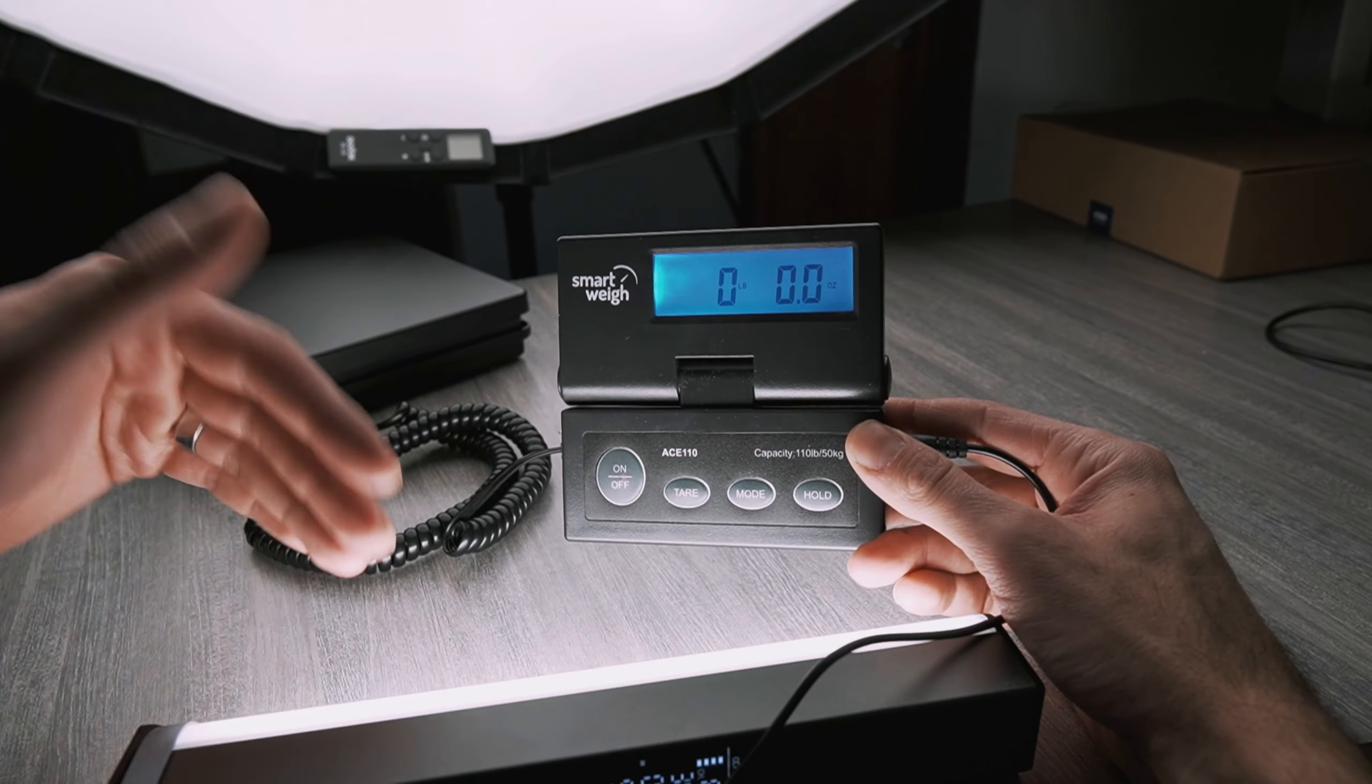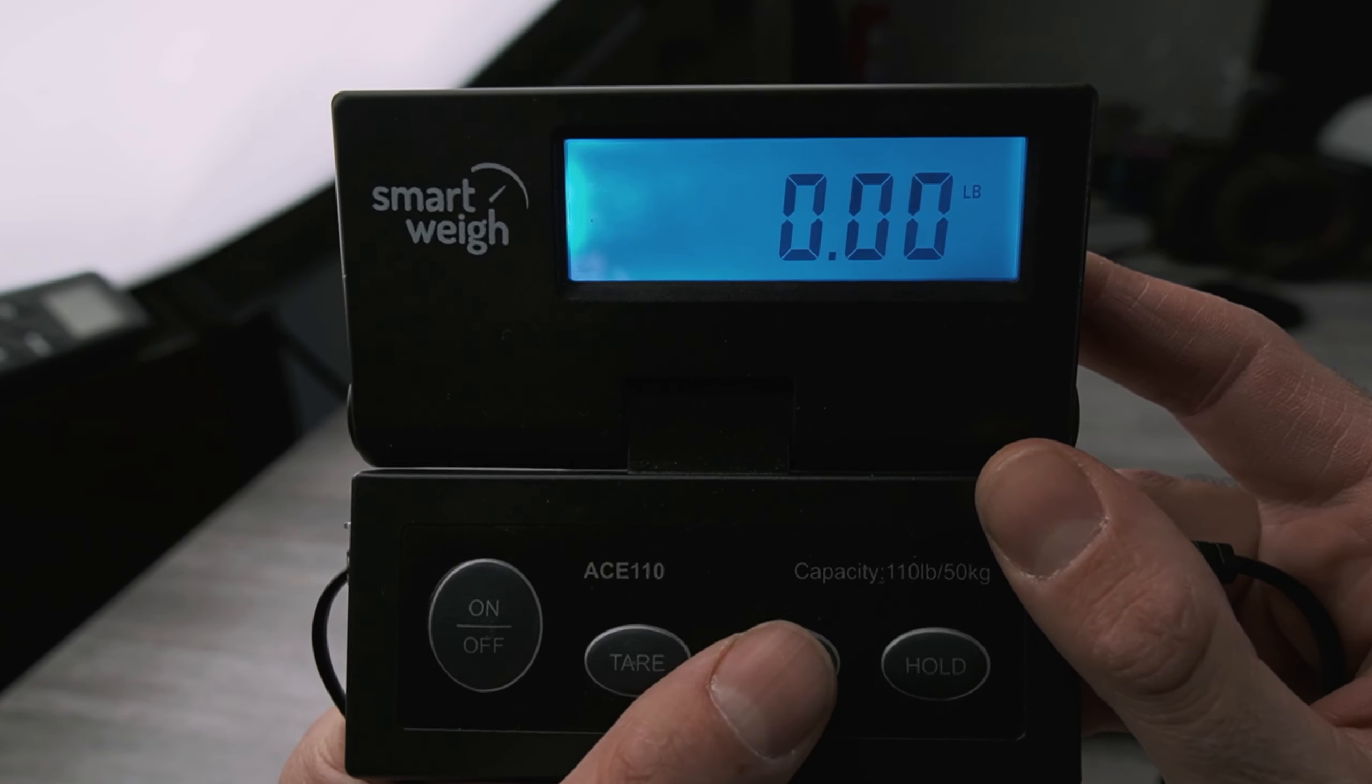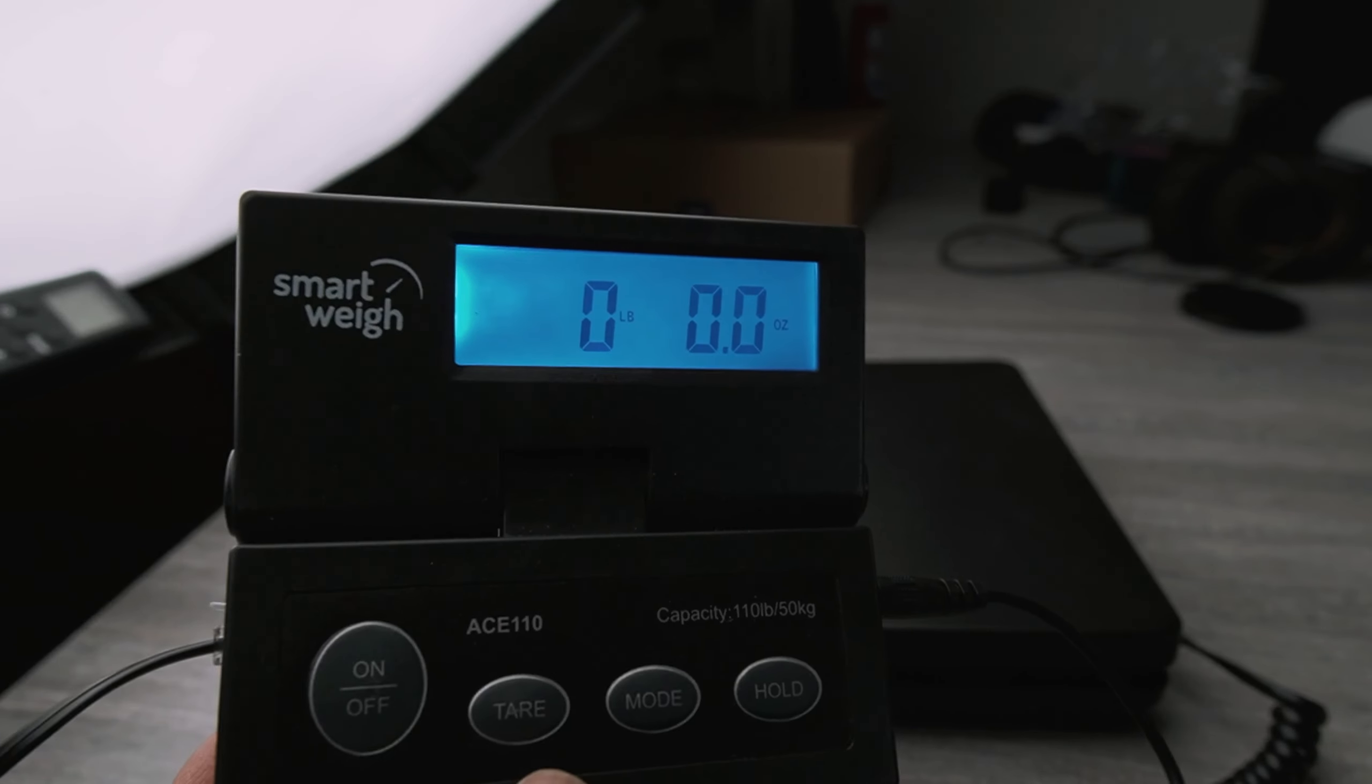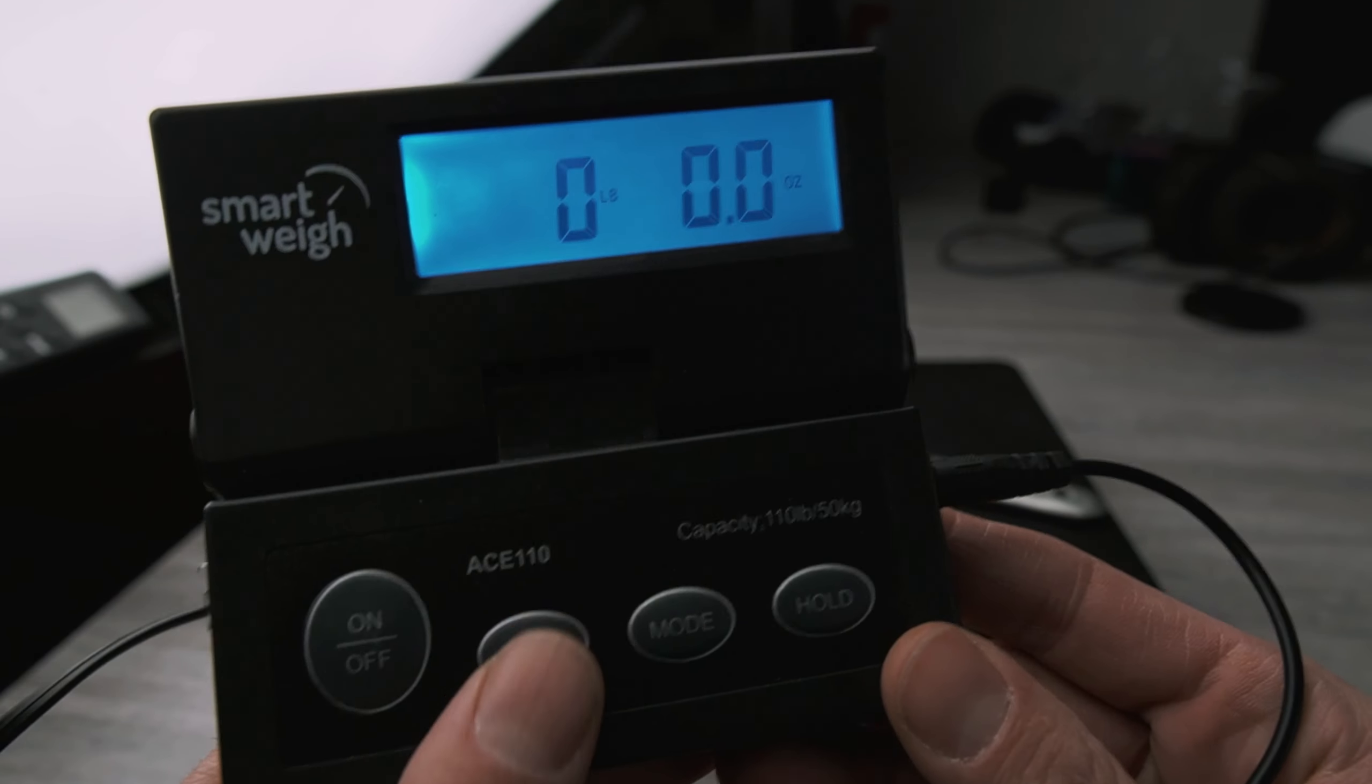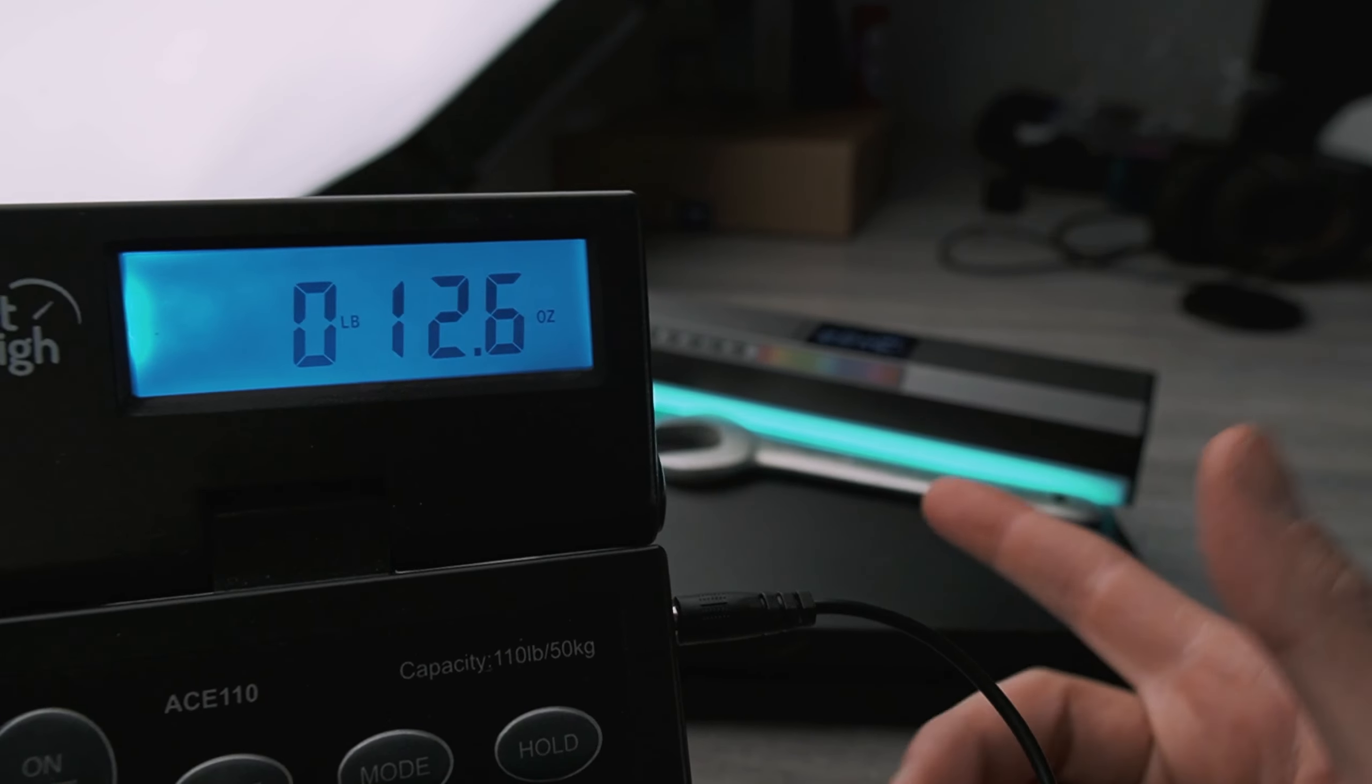We have a few different units or modes that you can choose from: pounds and ounces, decimal pounds, kilograms, or grams. At any point you can tare the scale, so if I put something on and want to add something to it, I can just hit the tare button to zero everything out and then add something else to know the weight.